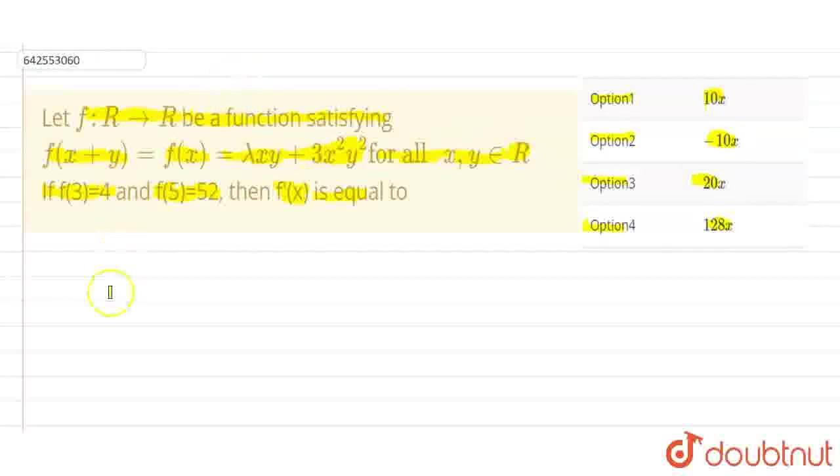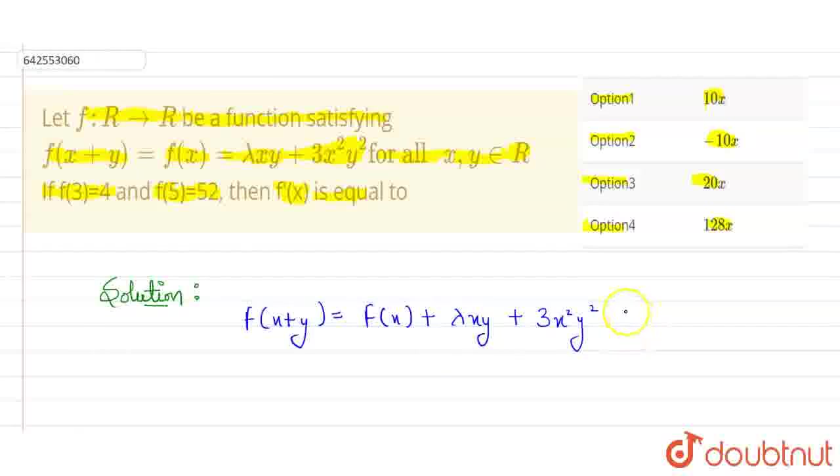So first of all, let me write this given function, then we'll try to solve it. This is the function of x plus y that is given to us in the equation. Now, we have to first find the value of lambda here. In this function, we can see lambda. We have to find its value, and how we can find its value?